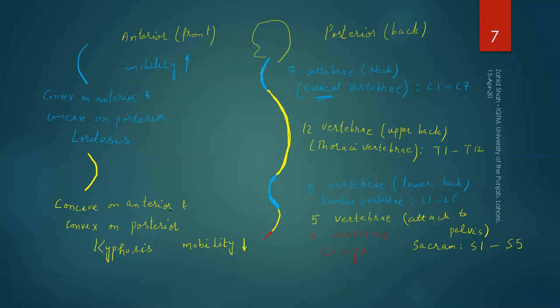Mobility can refer to movement within the vertebrae and the joints they form with other bones. Intervertebral movement is more in cervical and lumbar. There is slight movement within the thoracic vertebrae, and there is actually no movement within the sacrum and coccyx. However, the sacrum makes what we call the sacral-pelvic joint with the pelvis, so that joint has some movement. Free movement is possible within cervical and lumbar vertebrae.